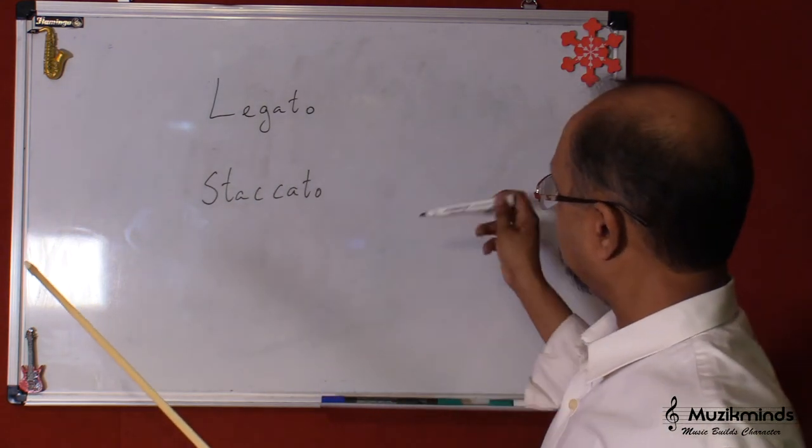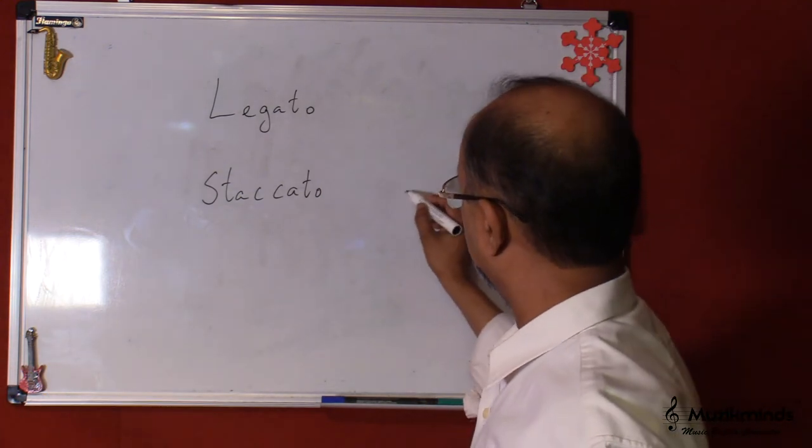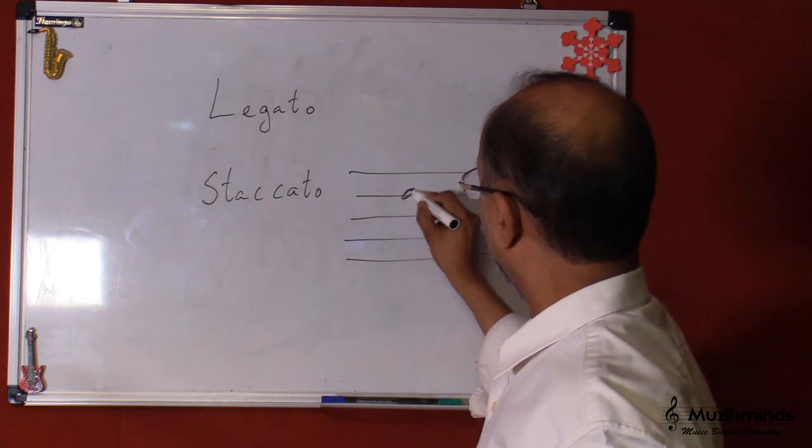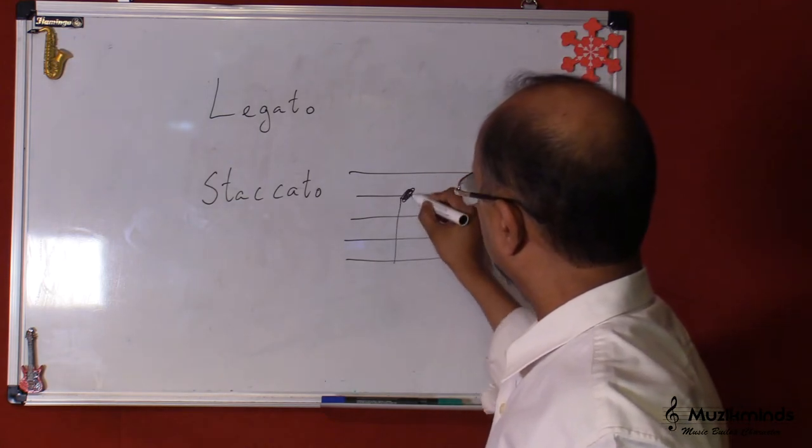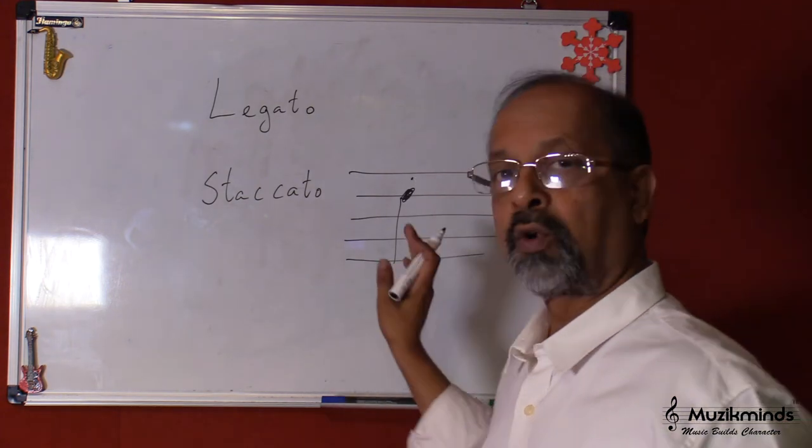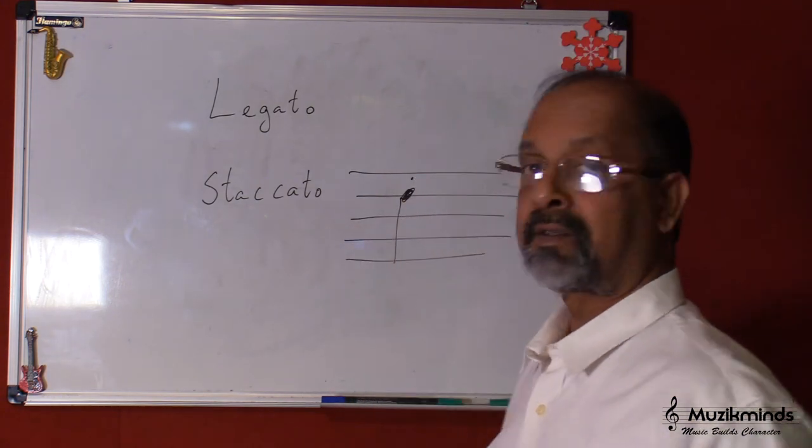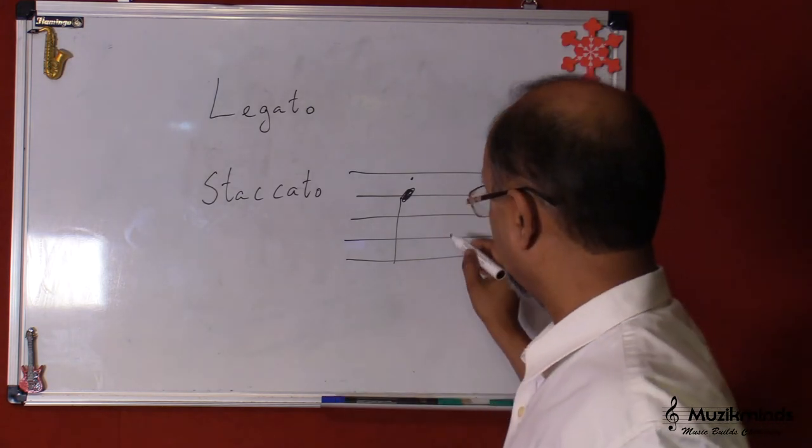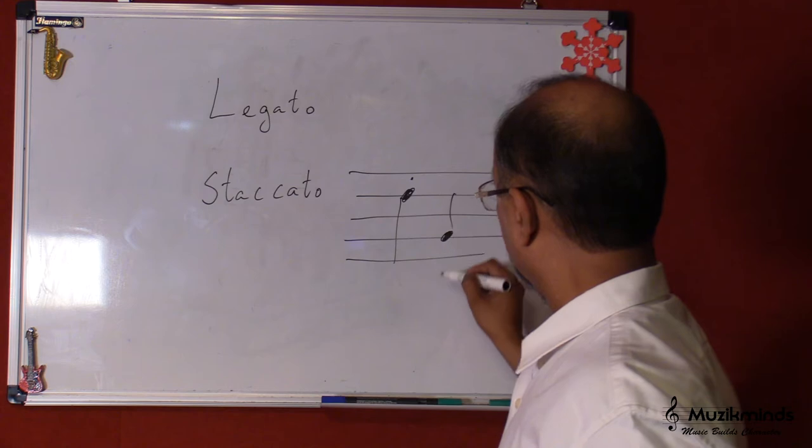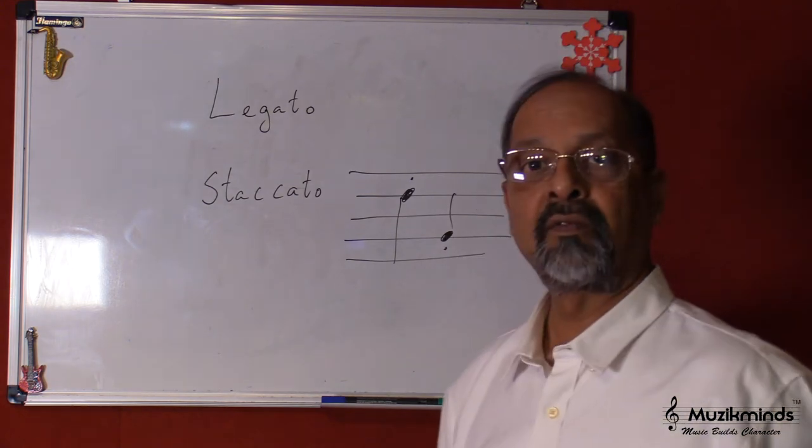Now staccato is usually shown as a dot on top of the note head. So now this is the note, the note head is here, so a dot on top of the note head would mean that this is staccato. It has to be played in a staccato, or if the note is down, it would be somewhere here.